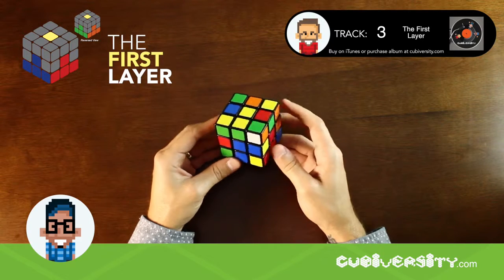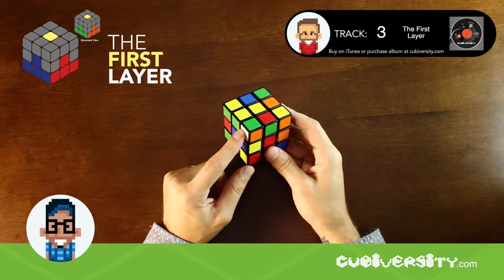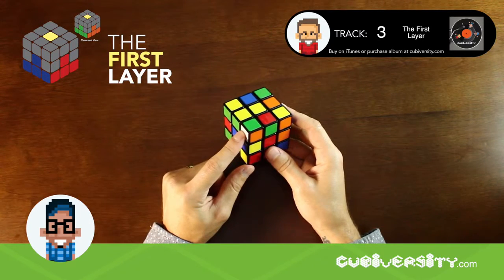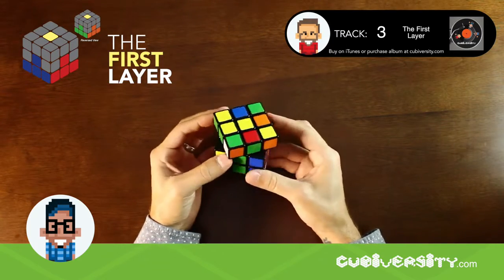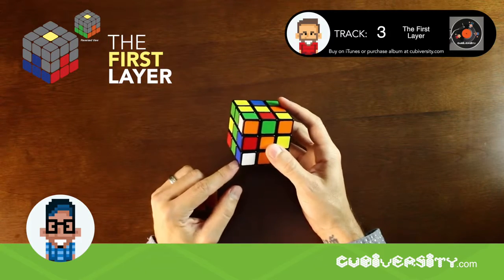Let's do an example solve of the first layer. Here's a corner piece that needs to be in the first layer. Let's move this over the correct corner and perform this algorithm.